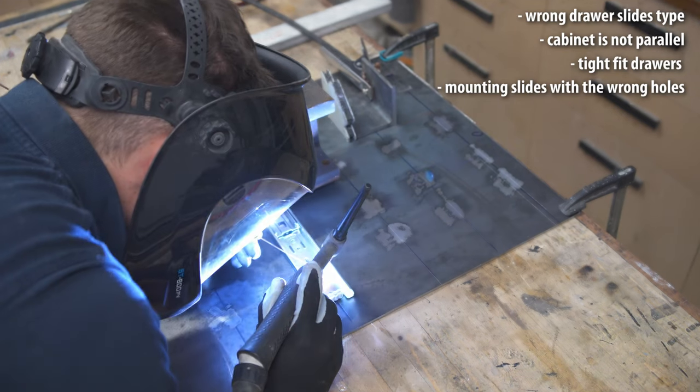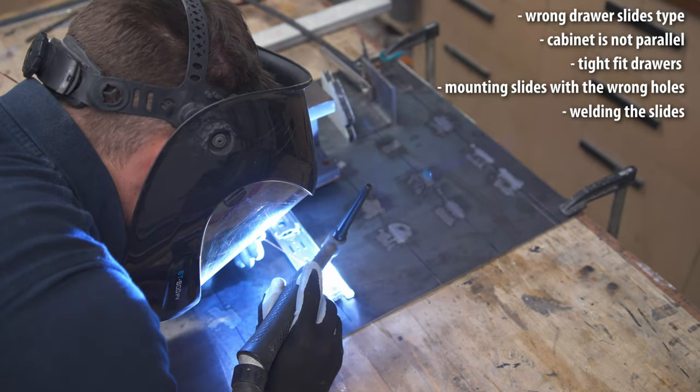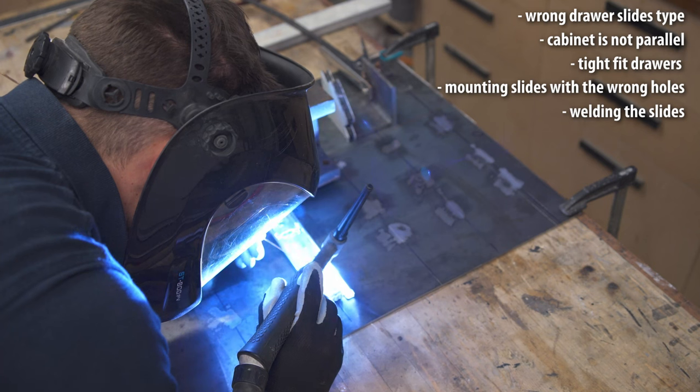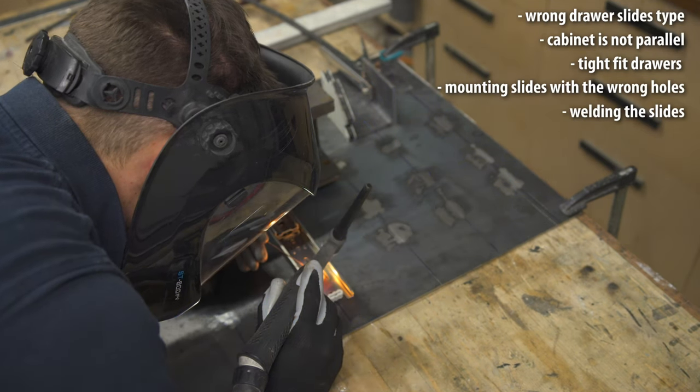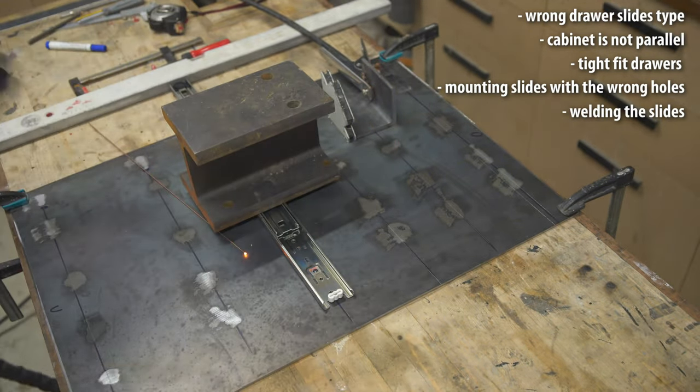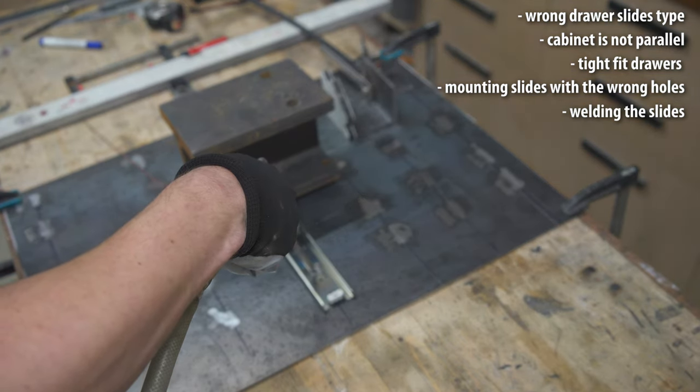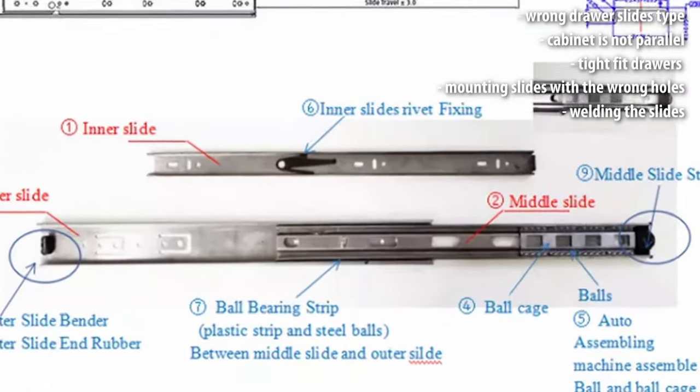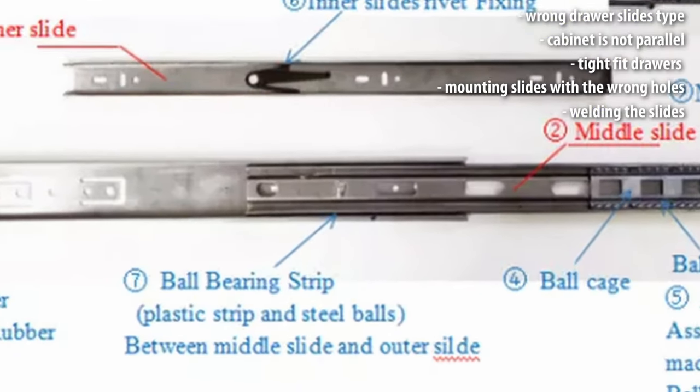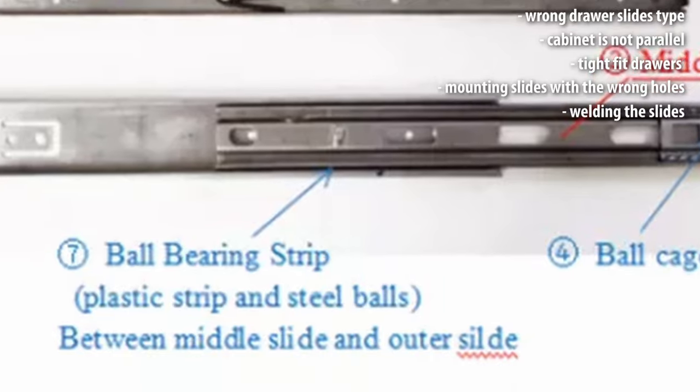Mistake number 5: welding the drawer slides. You will without doubt have a bad time welding drawer slides, but since I am lazy I did it anyway. A few things to consider: you'll need an air compressor to cool the spot which you just welded since there are plastic ball cages inside the drawer slides and they will melt on you if not cooled properly.